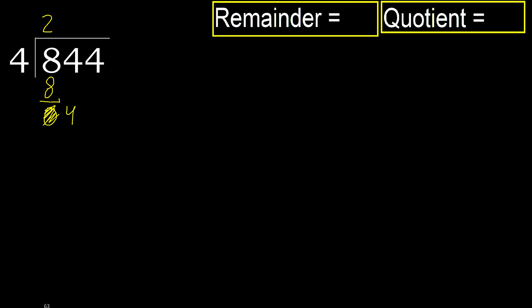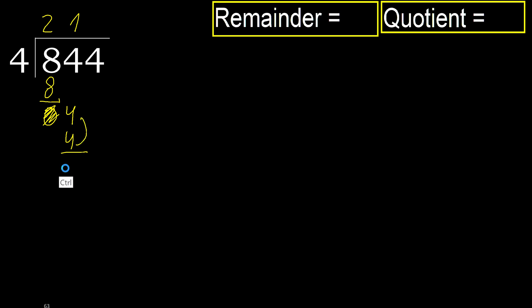Eliminate, 0. Bring down: multiply by 2 is 8 — that's greater. Multiply by 1 is 4, which is not greater. Subtract. Eliminate, 0.